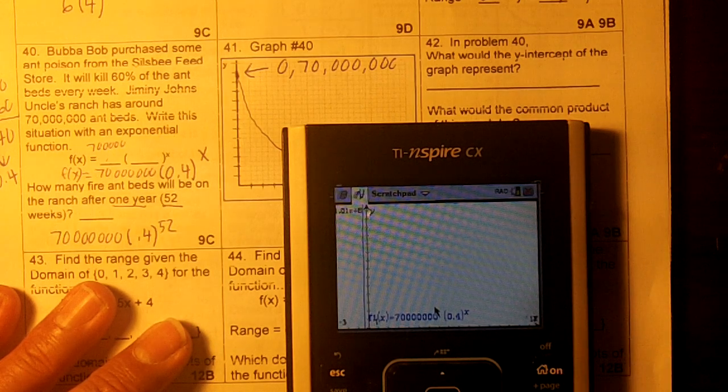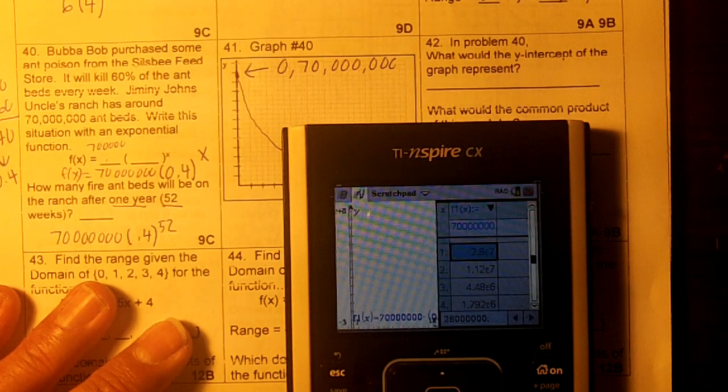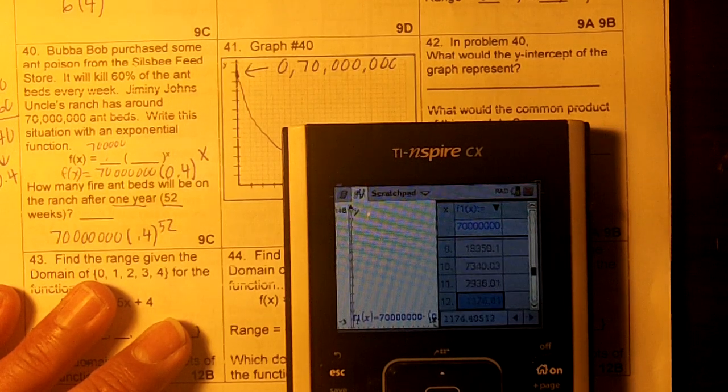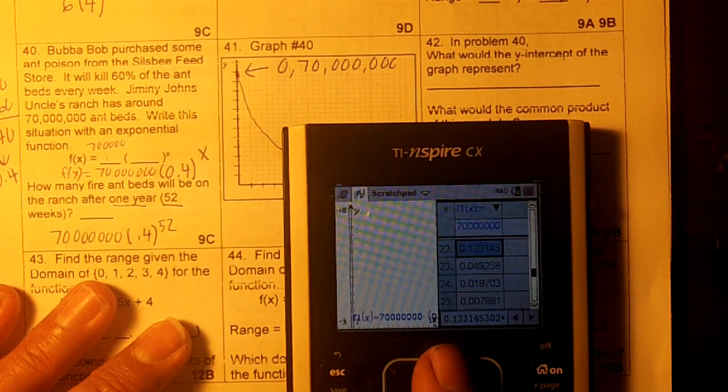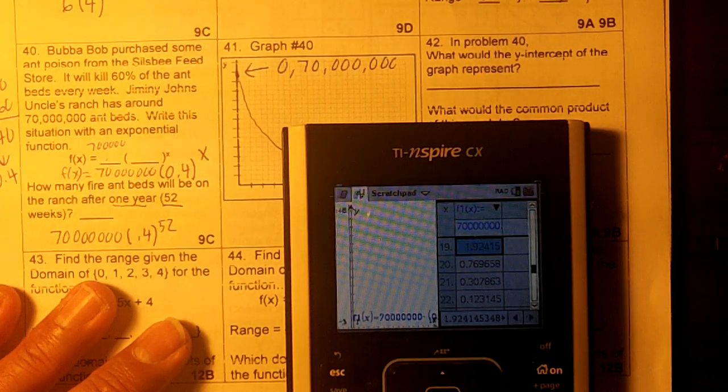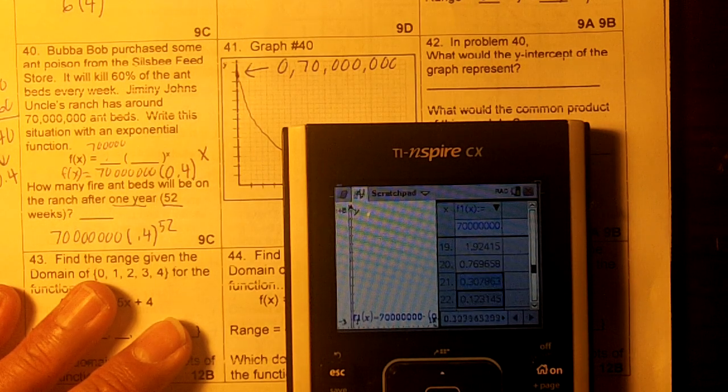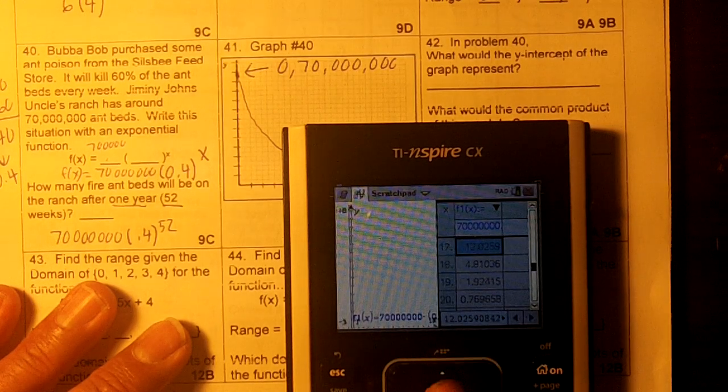Okay. So I'm going to hit Ctrl-T to get my table. And then I'm going to go down to 52. Notice the numbers are getting smaller here. Whoa. So we're going to have 0 ant-beds. 0 ant-beds happens actually at 20 weeks.